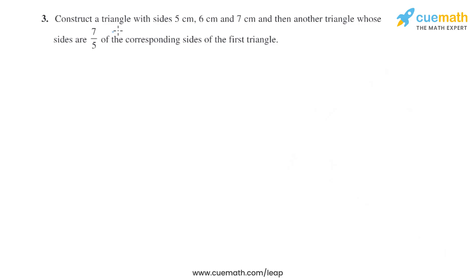Question 3 of this exercise says construct a triangle with sides 5 cm, 6 cm and 7 cm, and then another triangle whose sides are 7/5 of the corresponding sides of the first triangle. So let's start with the steps of construction.